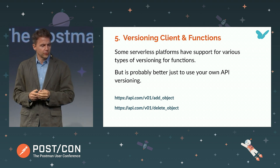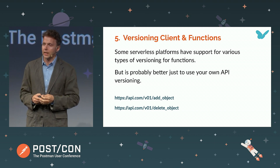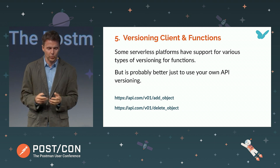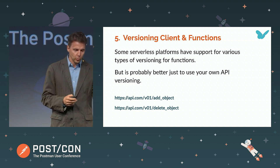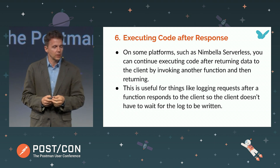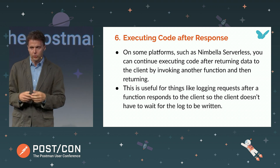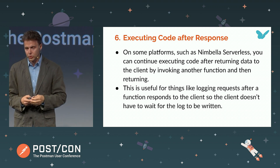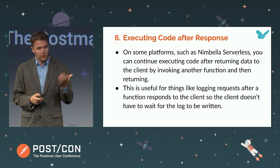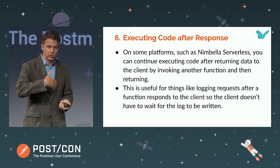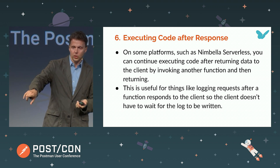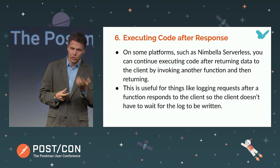Some platforms have support for versioning, but in any case it's good practice to include a version number in your API — it helps when moving from one API version to the next. Also interesting: you can execute code after a response. If you want to log something in your serverless function, you can invoke another function at the end, return to the client immediately, and that second function continues executing to do the logging — so the client doesn't have to wait for logs to be written.